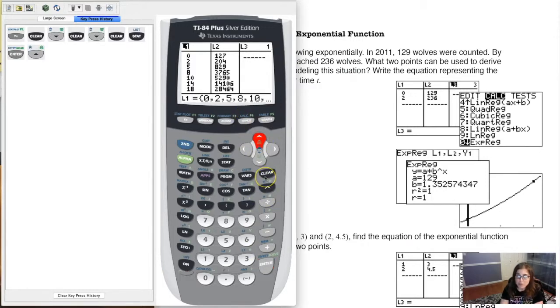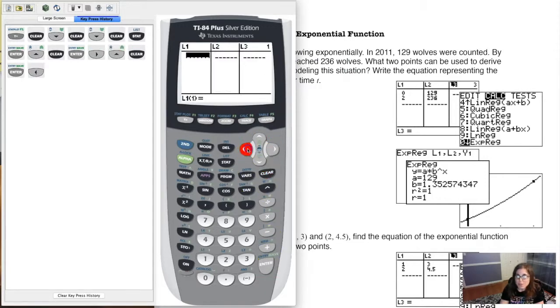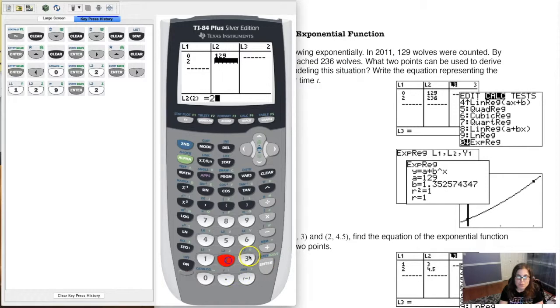So I'm going to go up into L1, where L1 itself has the black background. I'm going to hit clear and enter. And then let me clear out L2 as well. And I don't have too many data values to put in. I have 0, 129, and then 2, 236. And I'm going to put my x values into L1 and my y values into L2. So I've got my data entered. I'm just going to clear out my key press history so you can see the newer parts of this. So we did data entry.